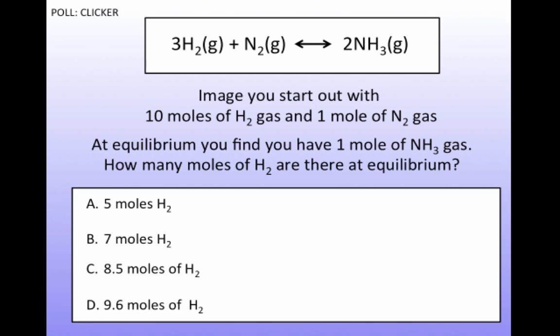So let's see if you can answer this question. Imagine you start out with 10 moles of hydrogen gas and 1 mole of nitrogen gas, and then the reaction goes and you find that you have 1 mole of ammonia at equilibrium. How many moles of H2 are there?